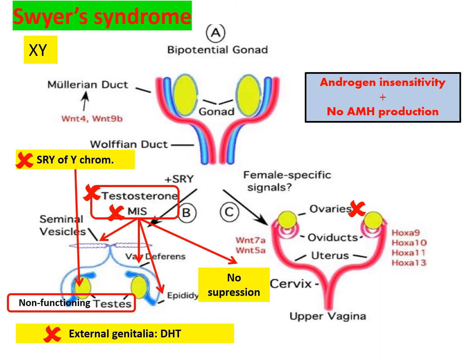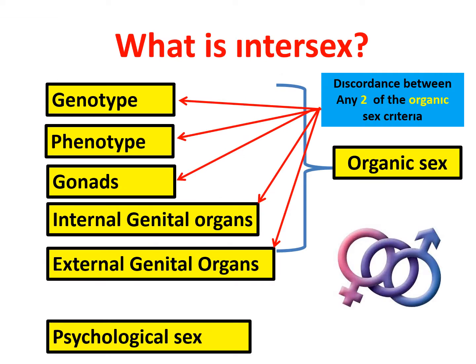This is a form of discrepancy between phenotype and genotype. This is the picture of a patient with Swyer syndrome: absent testicular Müllerian inhibitory substance, so despite being genotypically male, the phenotype is female, internal organs are female, but the gonads are non-functioning testes. It is like androgen insensitivity with the addition of absent anti-Müllerian hormone production. It is a form of intersex, because intersex means discordance between any two of the organic sex criteria. The genotype is 46,XY; the phenotype is female; gonads are testes; internal genital organs are female Müllerian structures; and external genitalia are female.